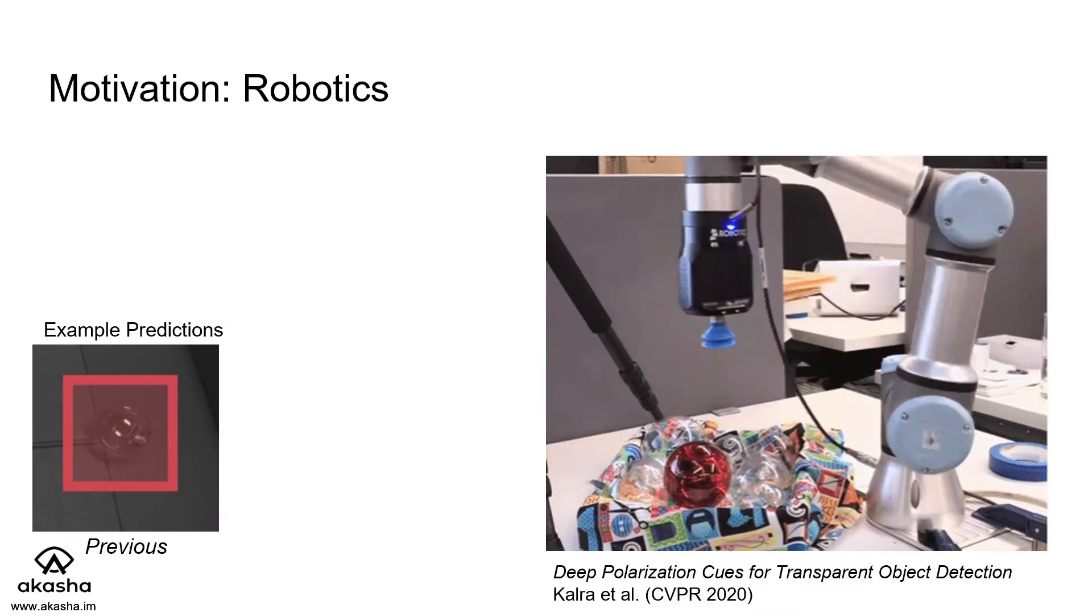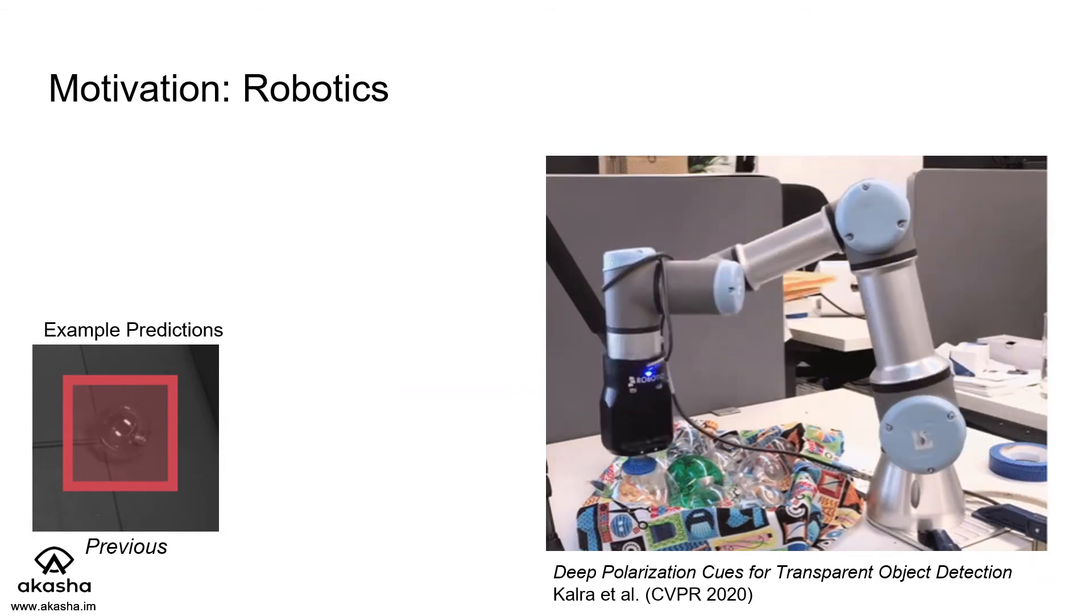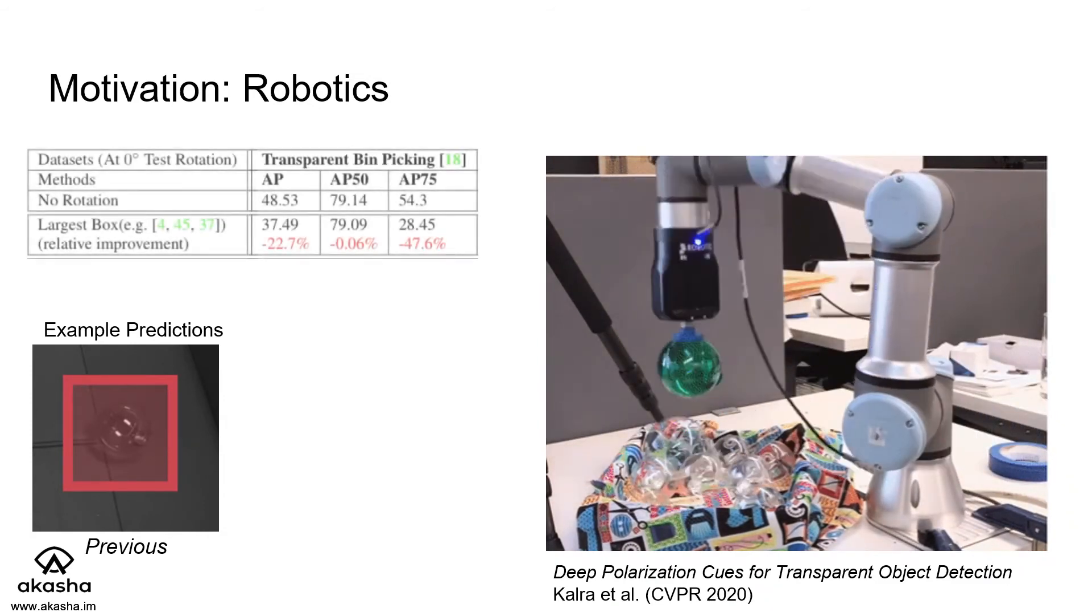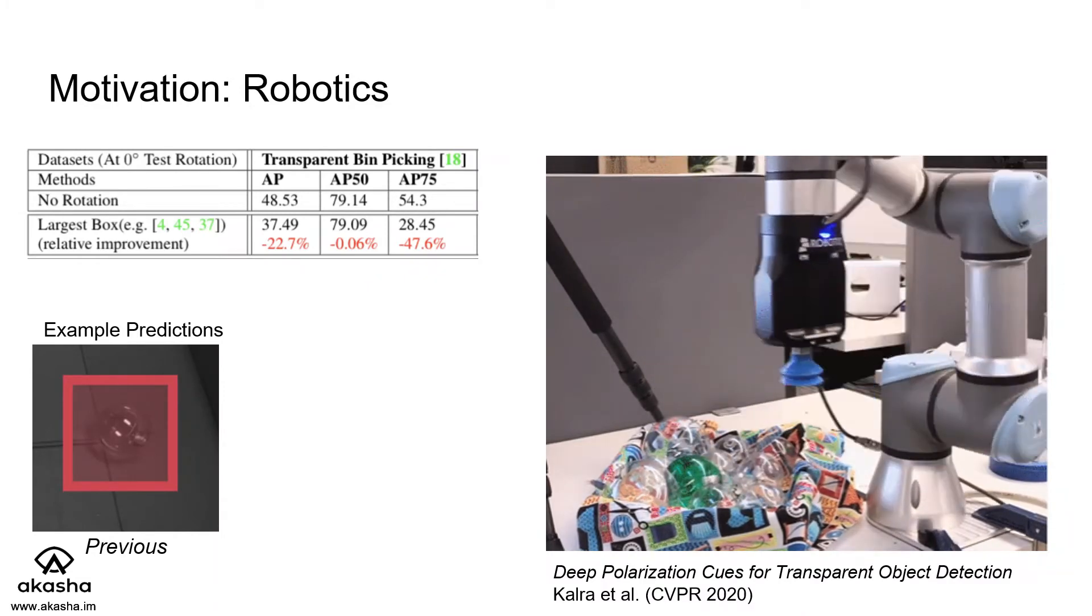For example, we tried training on a dataset from a CVPR 2020 robotics paper, and we found that when you train with rotation augmentations, you actually get much larger boxes than you should, and therefore large degradation in performance.